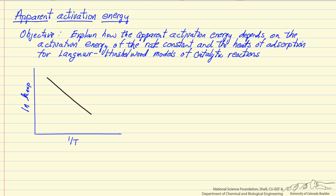In this screencast, I'm going to discuss how the apparent activation energy — meaning if we measure the log of the experimental rate constant versus inverse temperature — depends on the activation energy of the reaction rate constant and on the heats of adsorption for reactants, products, or other components present. As a result, this does not have to be a straight line, and the apparent activation energy can change with temperature.